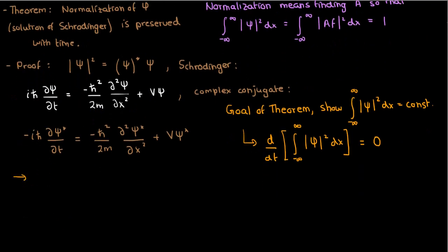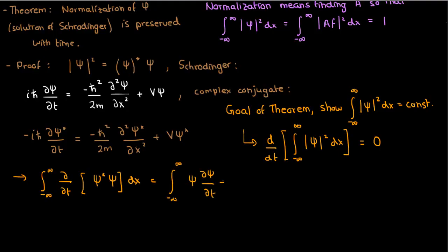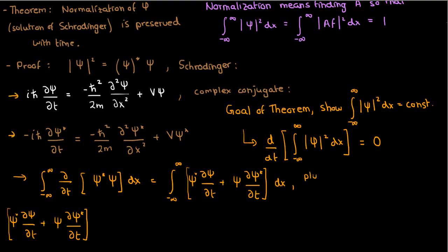So let's take the time derivative of the integral. We can replace psi squared by psi conjugate times psi and stick the derivative inside the integral. Differentiating within the integral, the total derivative with respect to t becomes a partial derivative. Now let's use the product rule: the derivative of a product of two functions is the first function times the derivative of the second, plus the second function times the derivative of the first. If we use the two forms of Schrödinger's equation — for the normal wave function and for the complex conjugate — we can substitute for the time derivatives in this expression.